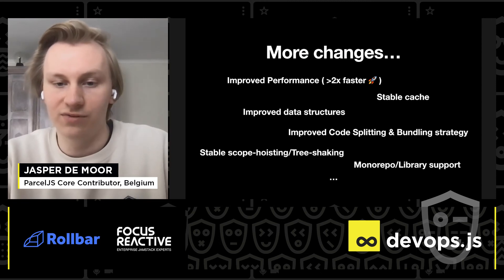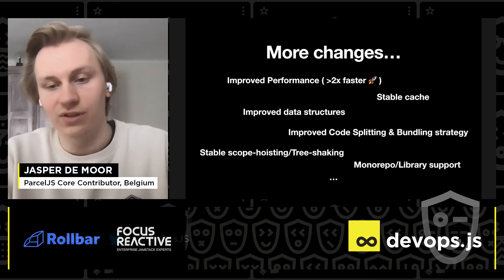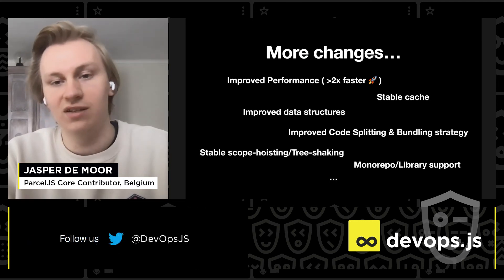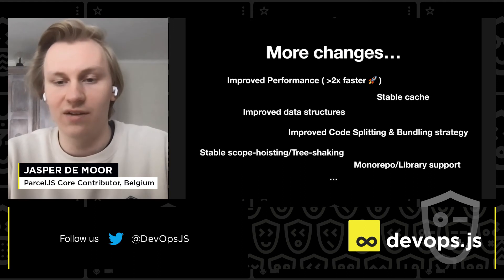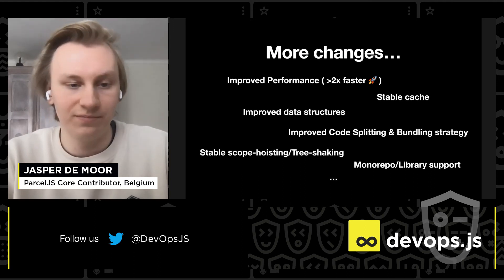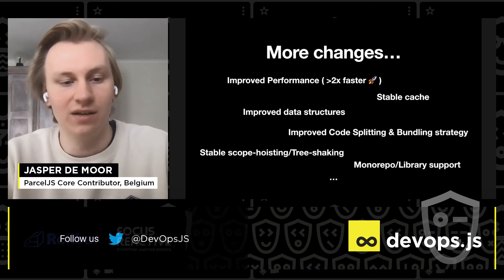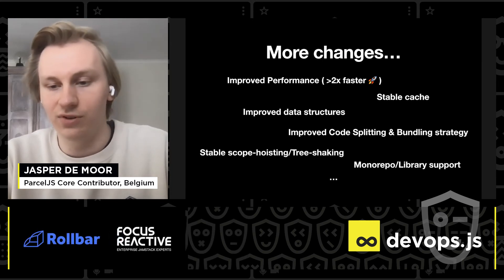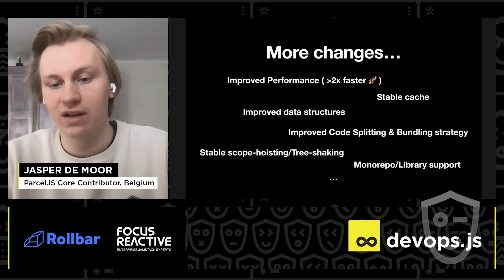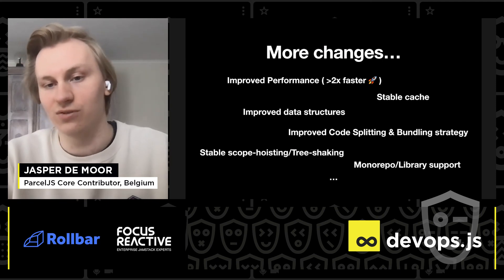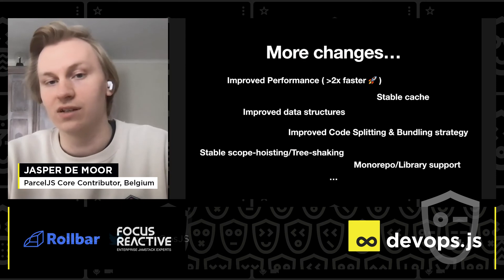We've also improved code splitting and bundling. For example, we have an HTTP/2 strategy now, which allows more code splitting than before. We've also made scope hoisting stable, so you can safely use it in production. And we've improved our monorepo and library support — for example, targets can be used to compile an entire monorepo with a single command.